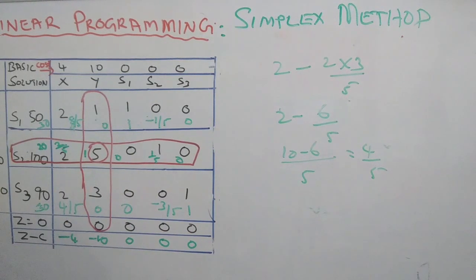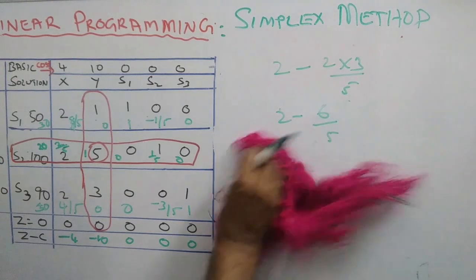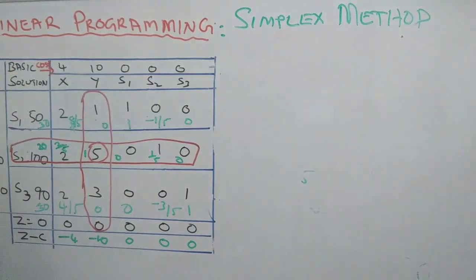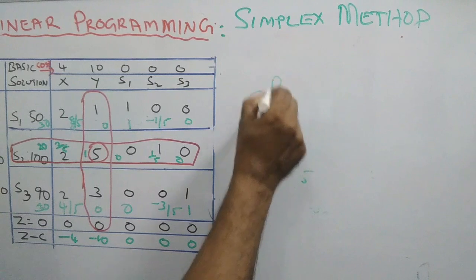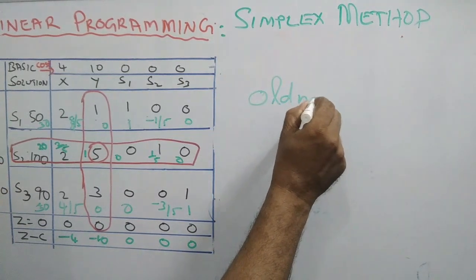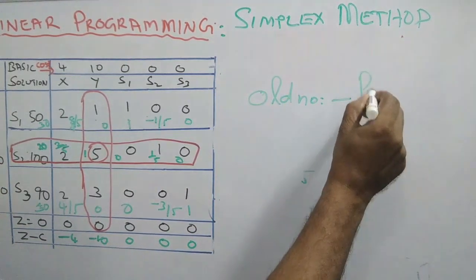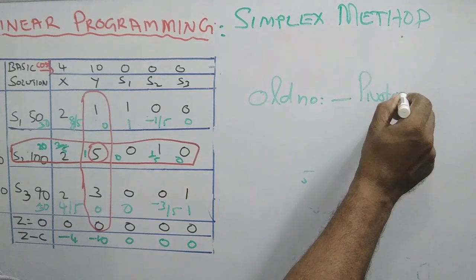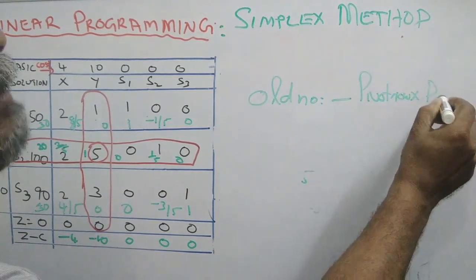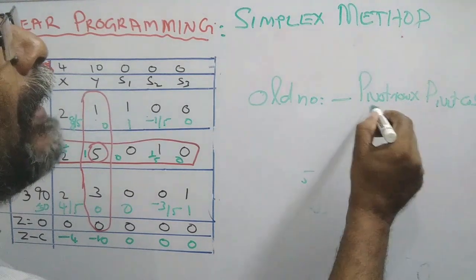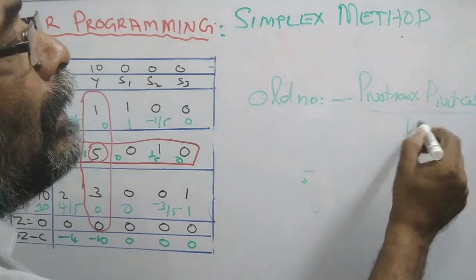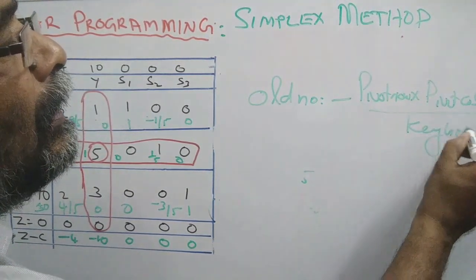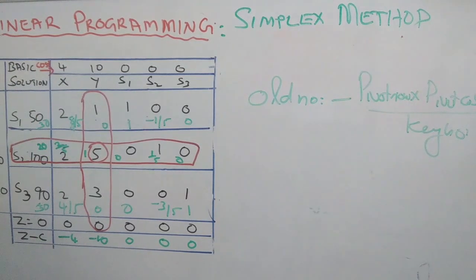Once again, I repeat the formula: old number minus — that is, the existing number — minus the corresponding number in the pivot row, into the corresponding number in the pivot column, divided by the key number. Study this formula well — this is the most important formula, and it is the only formula used in the Simplex method.